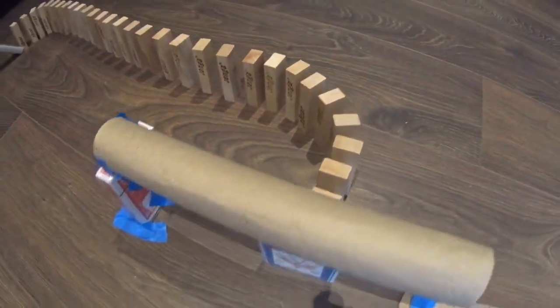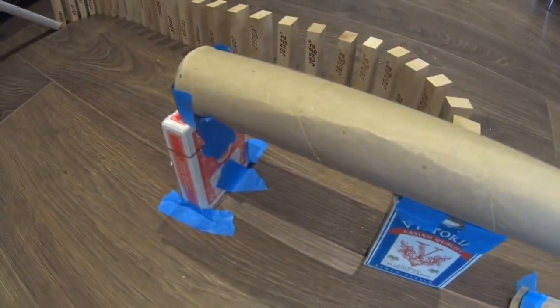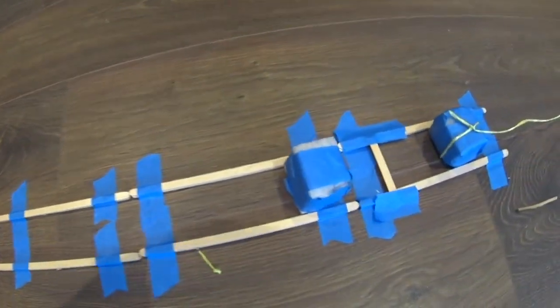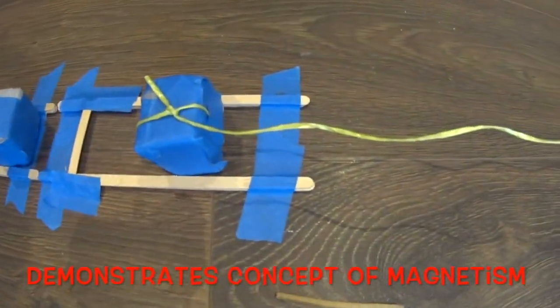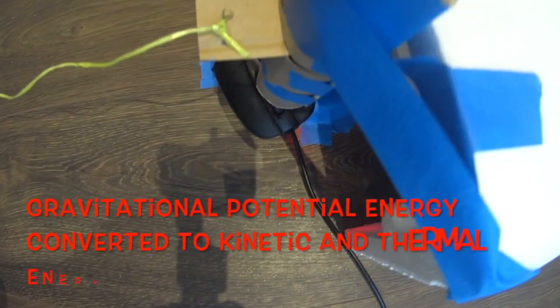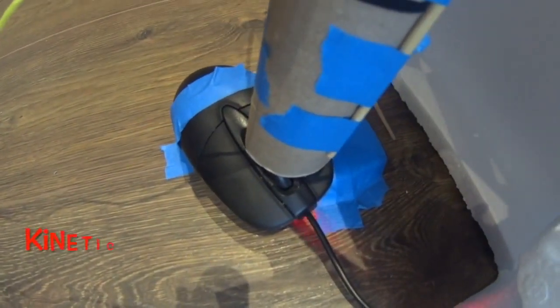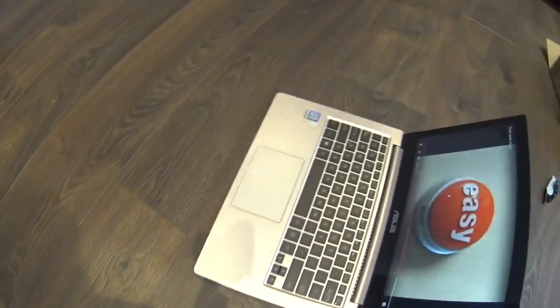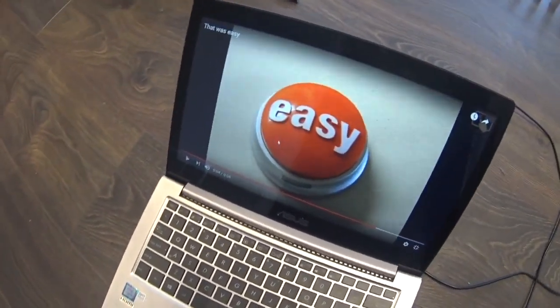These dominoes will then result in hitting this card box, releasing the marble inside this tube. As this marble rolls down, it'll hit the magnet, which will attract the other magnet, pulling the slit open for a marble inside to drop down, which will hit this mouse, which will start this video, which will say, 'that was easy.'